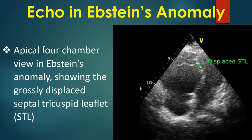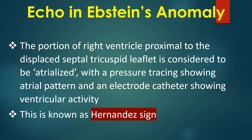Apical 4-chamber view in Epstein's anomaly showing the grossly displaced septal tricuspid leaflet. Normal distance between the septal attachments of the septal tricuspid leaflet and anterior mitral leaflet is only about 5 mm. The portion of the right ventricle proximal to the displaced septal tricuspid leaflet is considered to be atrialized, with a pressure tracing showing atrial pattern and an electrode catheter showing ventricular activity. This is known as Hernandes sign.